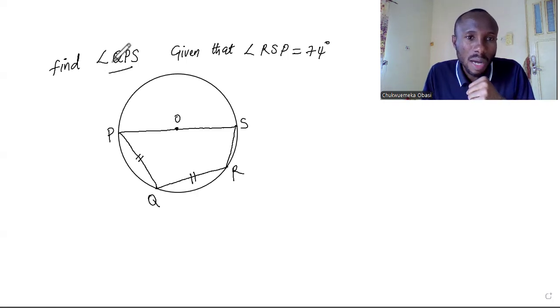We want to find angle QPS, but we're already given that angle RSP is 74 degrees. So let us add to this one. RSP will be like you move from point R to X then to P, and this place actually is 74 degrees. So I have to put that very clear, 74 degrees.